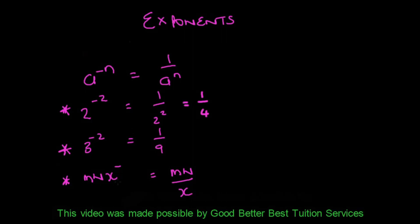Let's look at this one: m times n times x to the power negative 1. m has an invisible power of 1 and n has an invisible power of 1, but x is to the power negative 1. The variable x is the only one with a negative exponent, so x will be written as a denominator to make that negative 1 a positive 1.